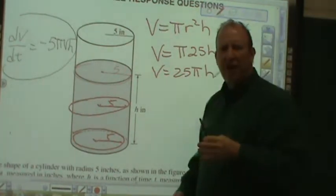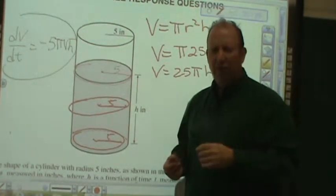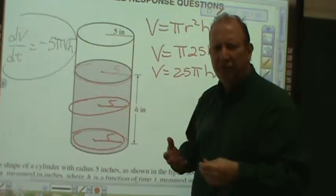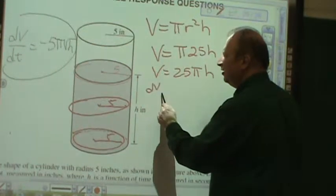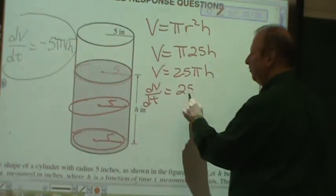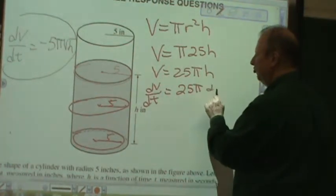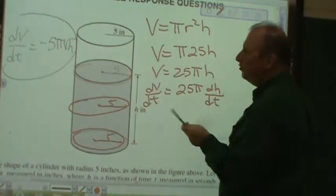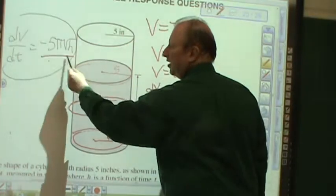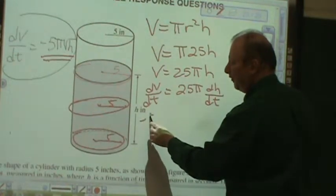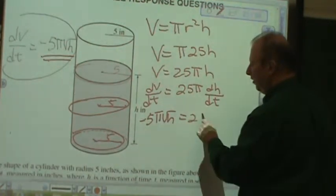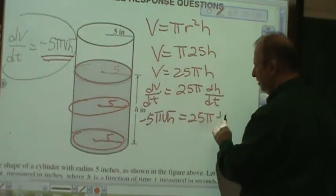And now what I want to know is how fast the height is changing relative to time. Well, now I have to find the derivative in terms of t. So I can say dv/dt is equal to 25π(dh/dt). I know from before the given dv/dt is negative 5π√h. So negative 5π√h is equal to 25π(dh/dt).